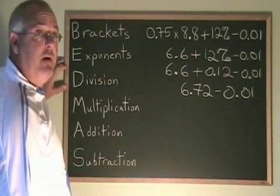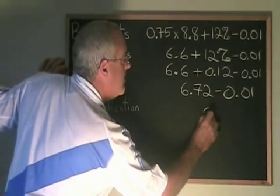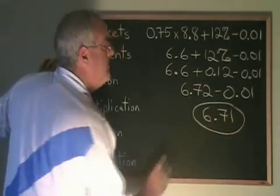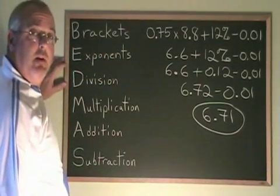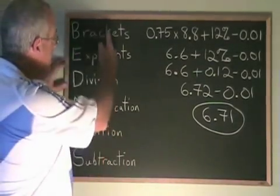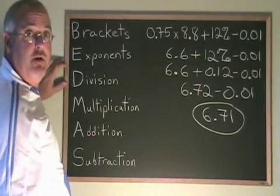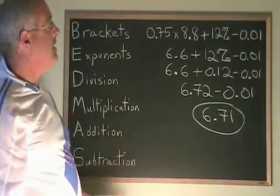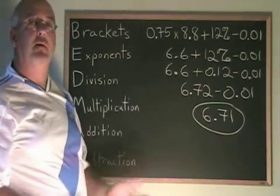6.72 minus 0.01 is equal to 6.71. That's my answer. So when we're working with decimal and percent, we are still required to use the order of operations. But this makes it easier, not harder, because the order of operations allows us to concentrate on one operation at a time.